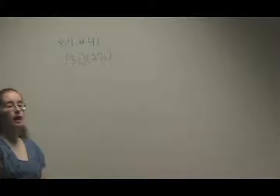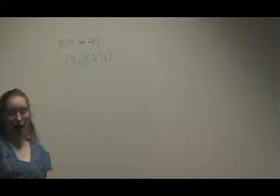We're doing number 41 in section 8.7, and we're asked to multiply these two numbers. You can see they're imaginary numbers. We have the i's.